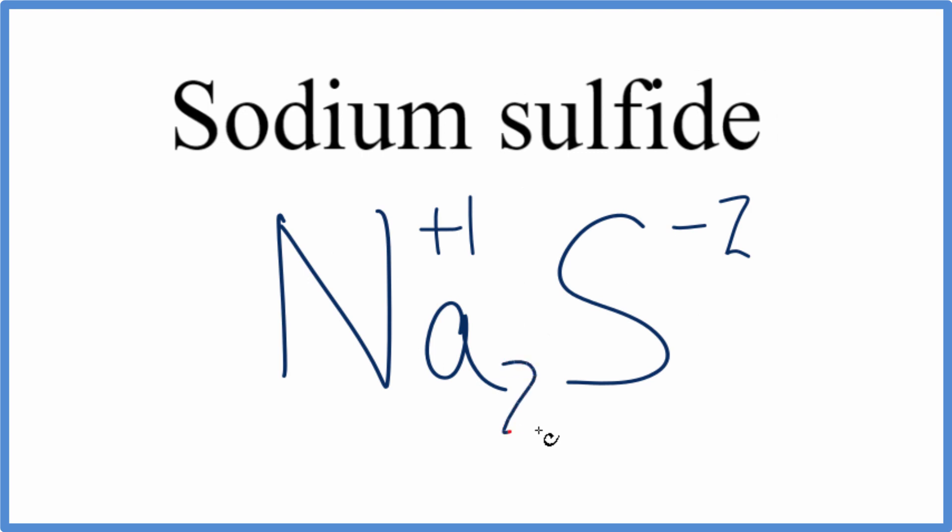If I have two sodiums, two times plus one, that would give me plus two, and that would cancel out the minus two, and that would make Na2S the formula for sodium sulfide. We can check our work using the crisscross method.